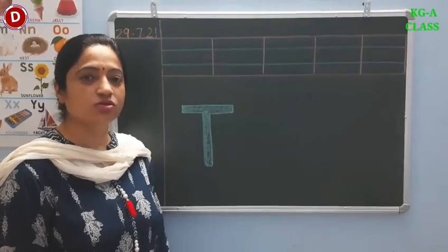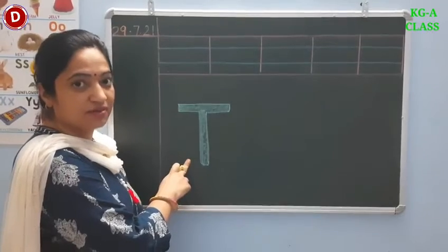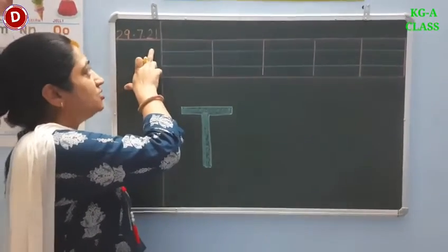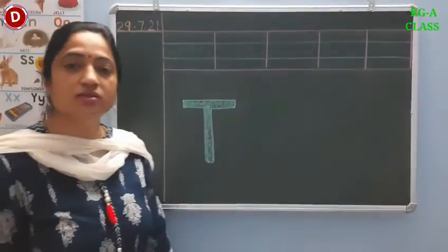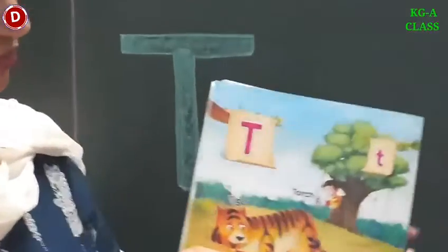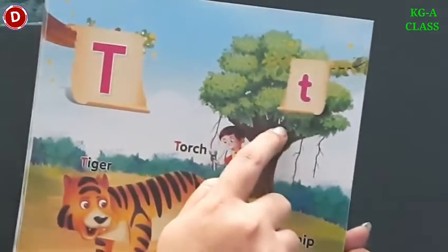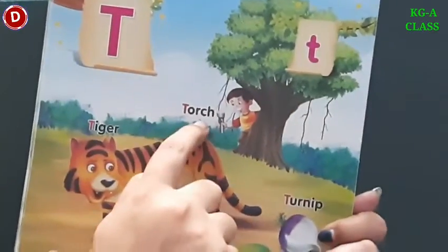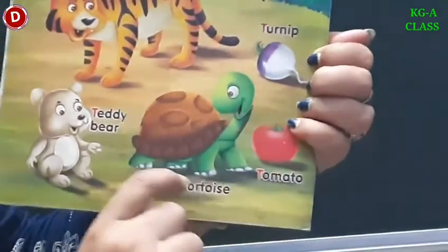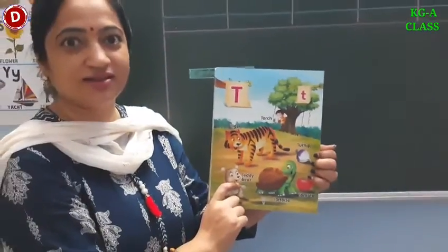Children, today I will teach you to write capital letter T. Look here, children. This is capital T. Today's date is 29th July 2021. Now children, there are many things which start with letter T. Look here — this is capital T, this is small T. T for tree, T for torch, T for tiger, T for turnip, T for tomato, T for tortoise, and T for teddy bear — your favorite, isn't it children?